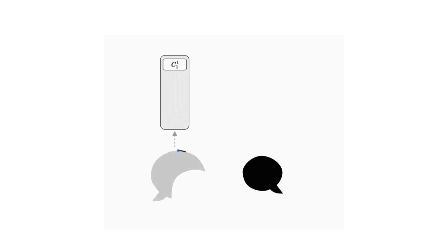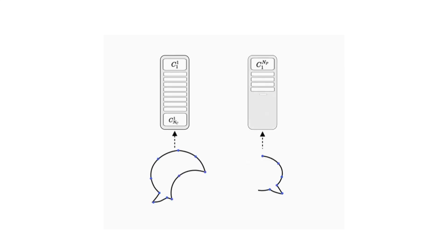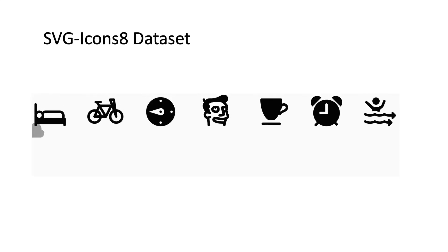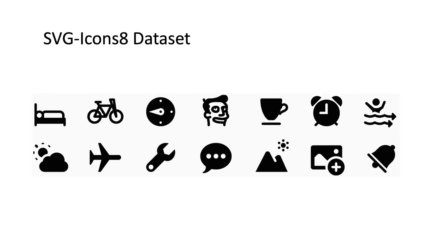For SVGs with multiple shapes, we propose to mimic the hierarchical nature of SVGs by encoding every shape separately. We train our model using a new large-scale dataset of 100,000 SVG icons.